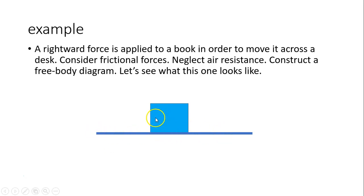So here is the desk and here is the book. The box is the book. So there is a rightward applied force and there is friction, which has to be leftward. And there is downward gravity and upward normal force.